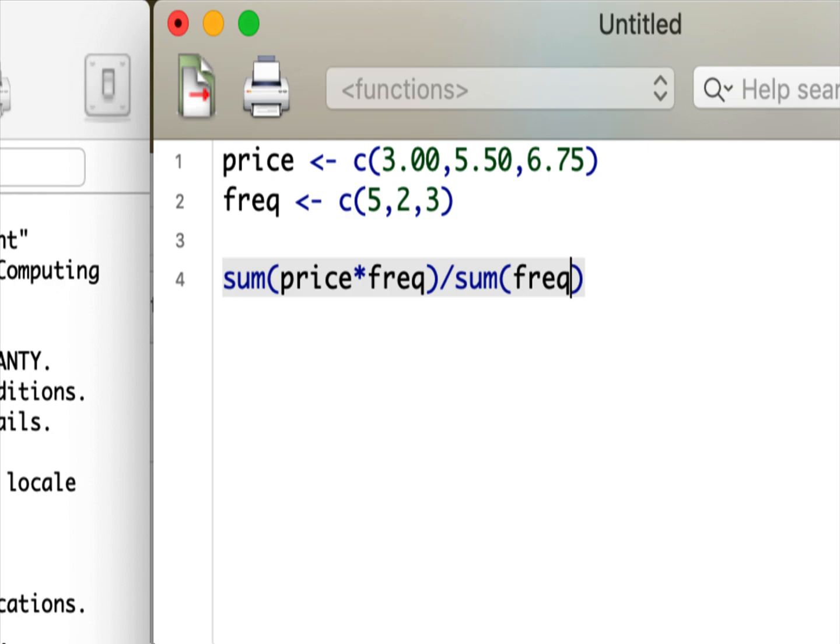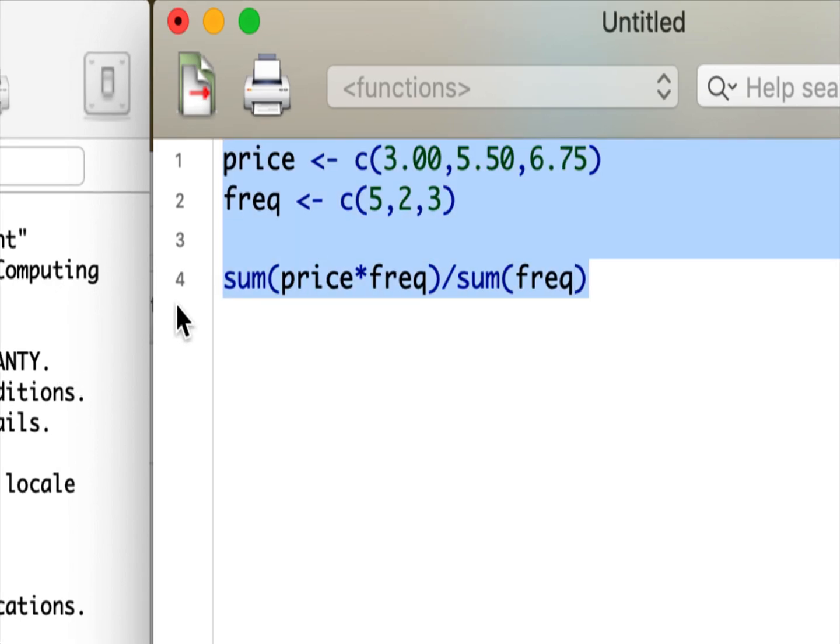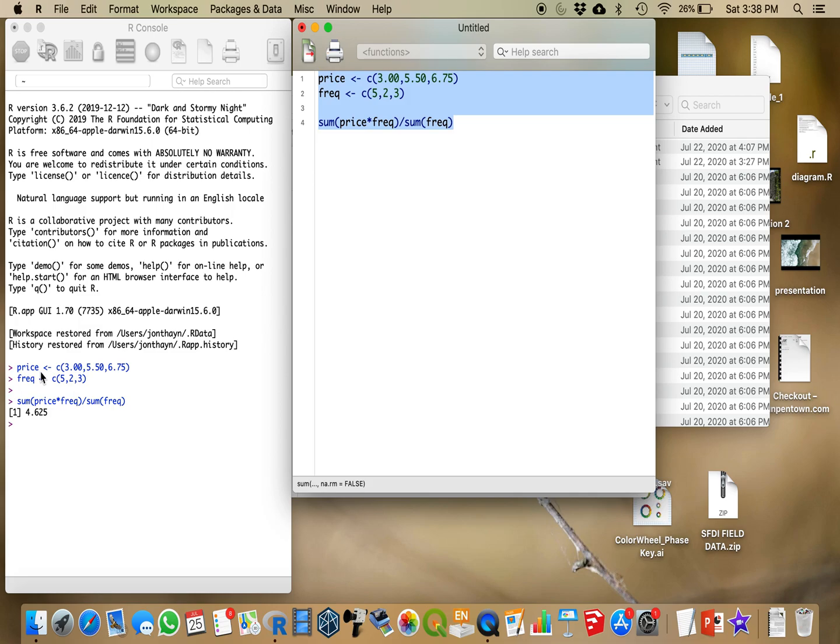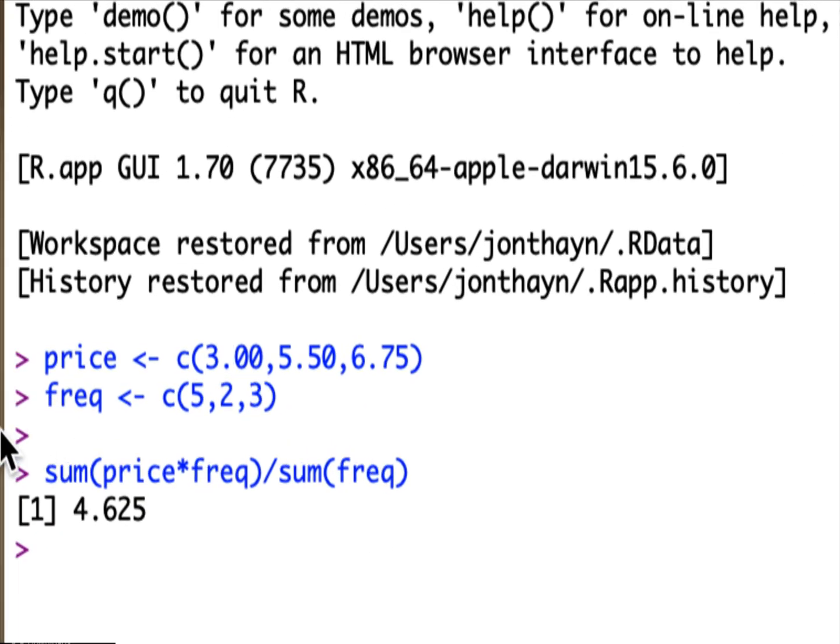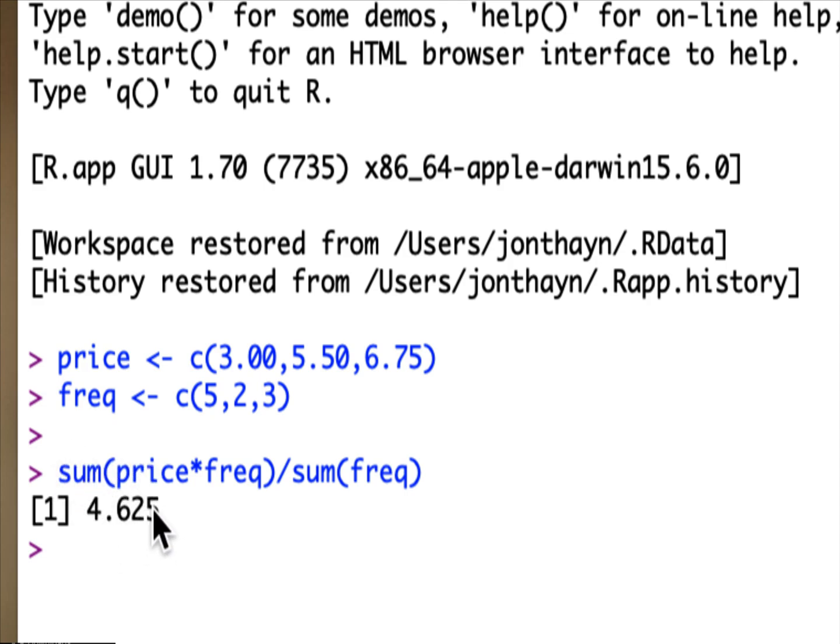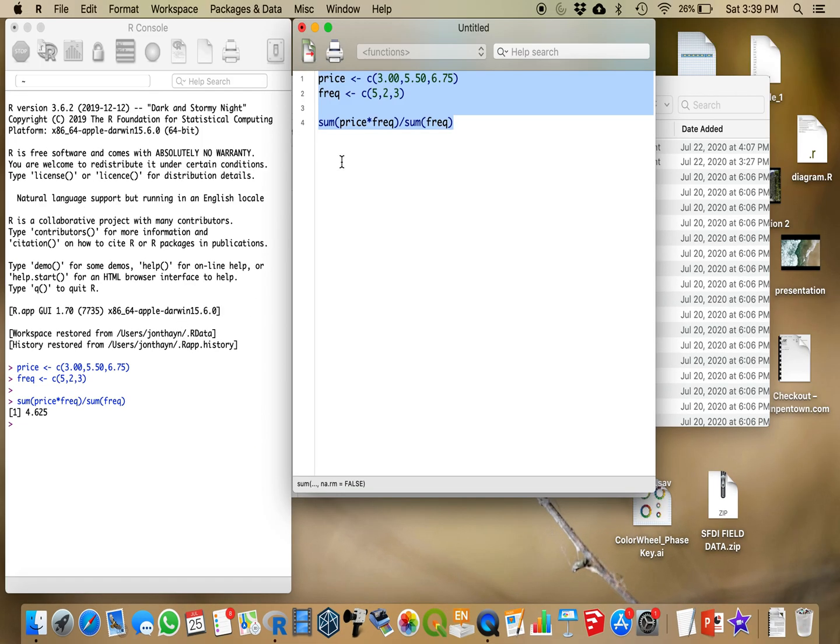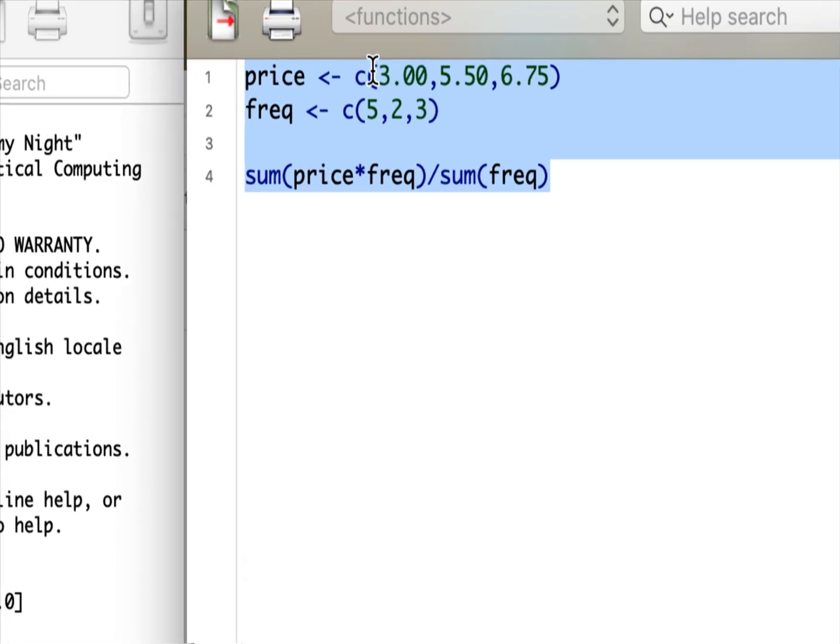So it's telling us here, once we have run all that, that our optimum price here is four dollars and sixty three cents. So the weighted mean, it is actually exactly the same as if I had...